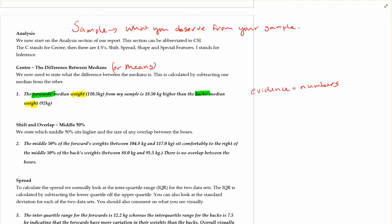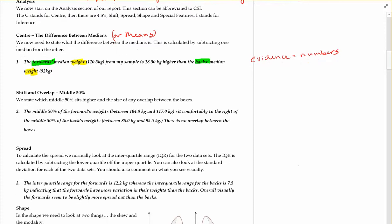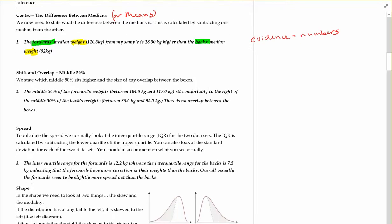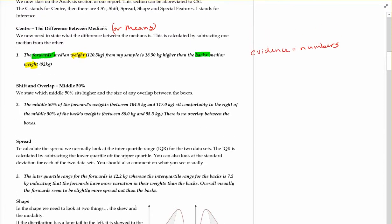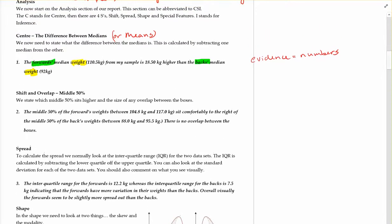Moving on to the next step, we talk about this in a little bit more detail. Carrying on with just the basics, the next thing we're going to look at is shift and overlap — and this is of the middle 50%. Remember on your box and whisker graphs, the middle 50% is the box. You have to be talking about the middle 50% — use those words, not just 'the box.' We're going to state which middle 50% sits higher and the size of any overlap between the boxes.